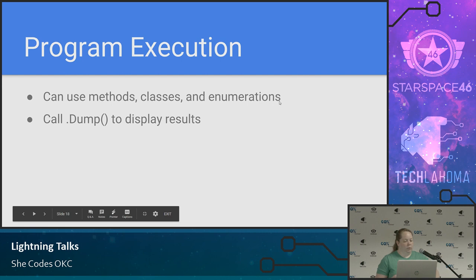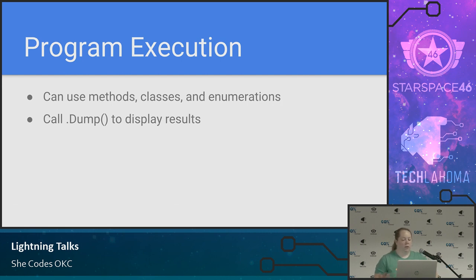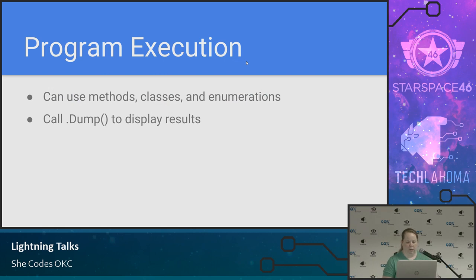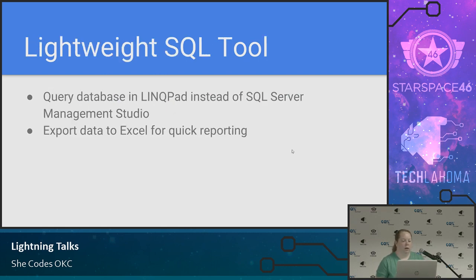Programs is our third option — expressions, statements, and programs. Here we can call other methods, define classes, and have enumerations. And again, we can still use .Dump(). I don't think I have a great example of that one — if you want to see an example, I can show you later. So those are the types of things we can do with C# and VB.